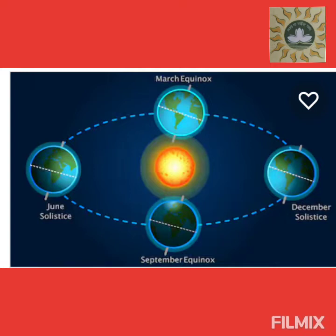As you can see here, the earth is rotating around the sun. And like we have road numbers, even the earth has a place to rotate, and that is known as the orbit.